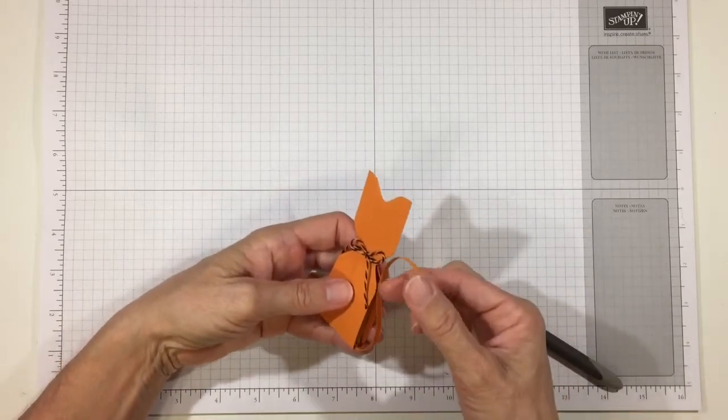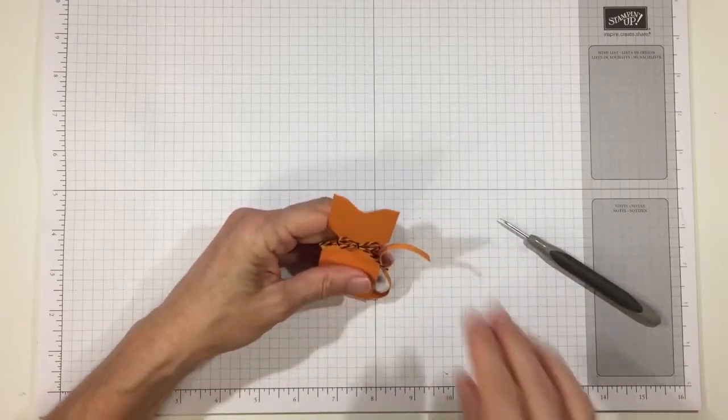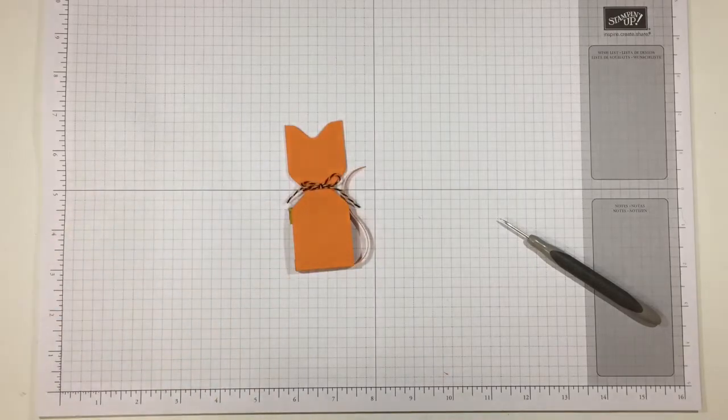Now you can curl it all the way around if you want, which will actually really look cute. I'm going to cut mine just a wee bit shorter at an angle so it makes it look like he has a pointed tail at the end. And that's the tail. For his eyes and his nose...